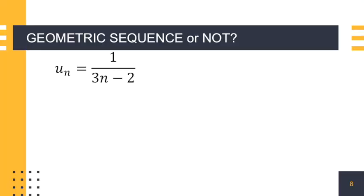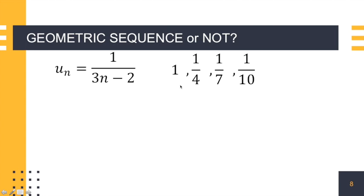Third example. This is the geometric sequence u sub n is equal to 1 over 3n minus 2. What we can do is find the terms in the sequence. If n is equal to 1, u sub 1 is 1. u sub 2 is 1 over 6 minus 2, which gives us 1 fourth. If n is equal to 3, the third term is 1 over 7. And the fourth term, n equals 4, gives us 1 over 10. Now find the ratio among pairs of consecutive terms: 1 fourth divided by 1 is 1 fourth. But 1 over 7 divided by 1 fourth is obviously not equal to 1 fourth. Therefore, this is not a geometric sequence.